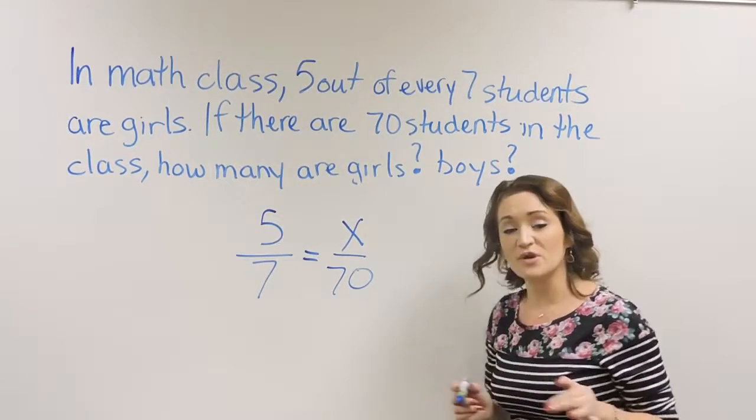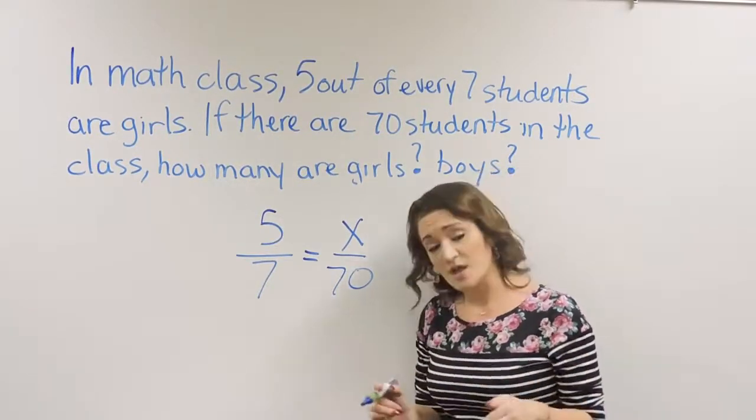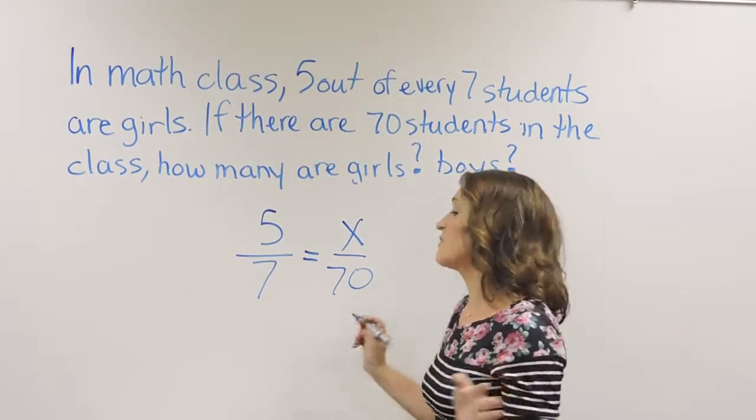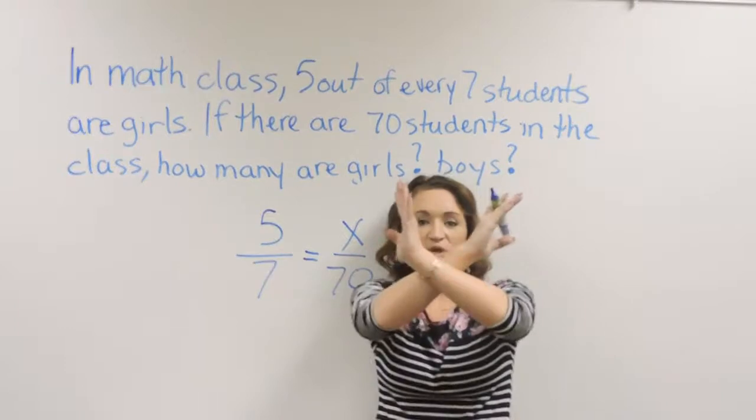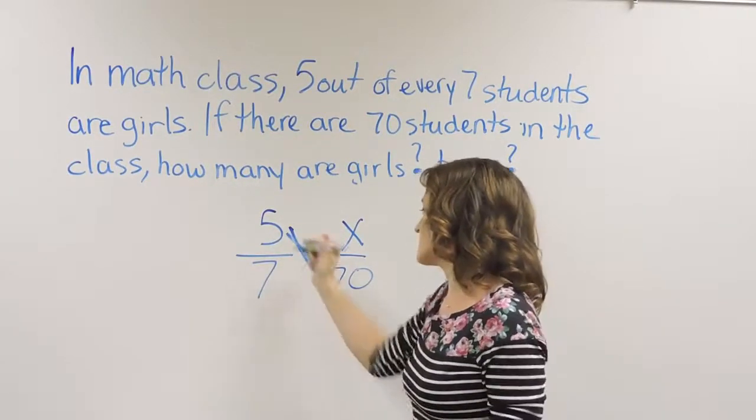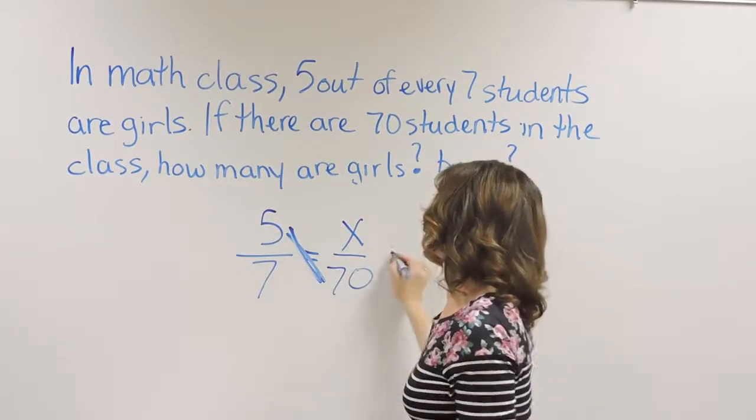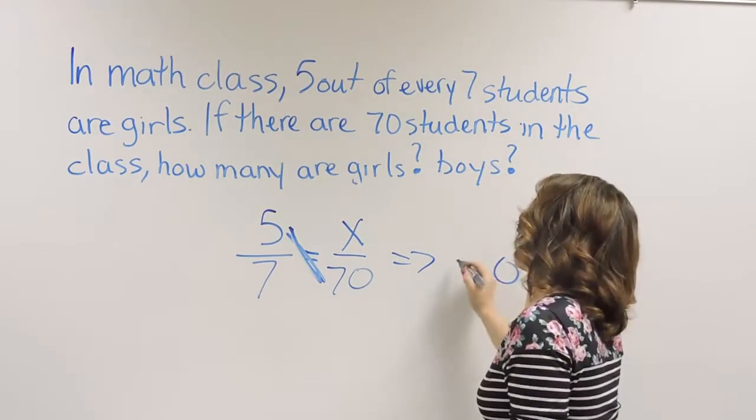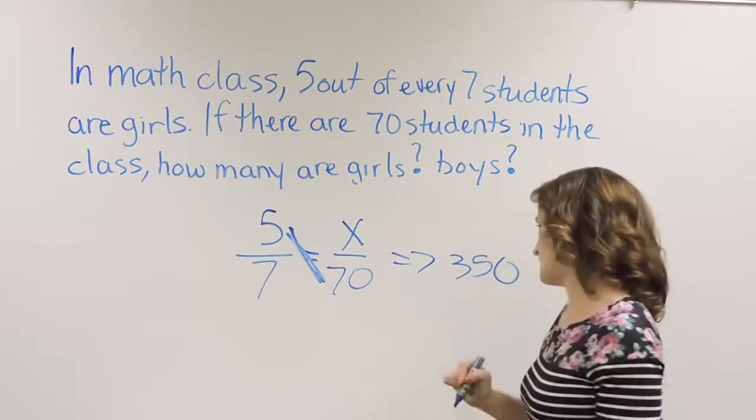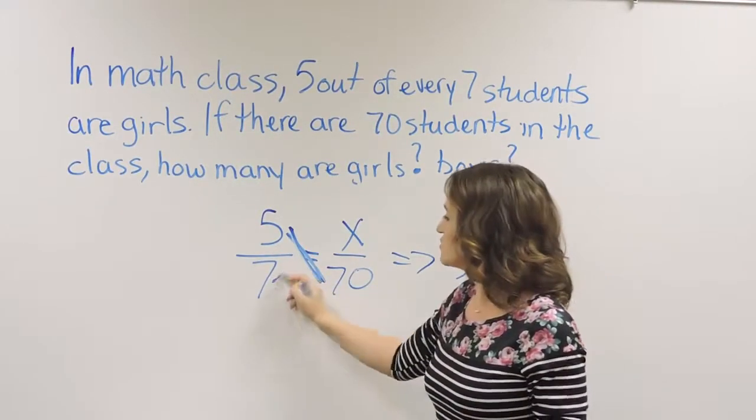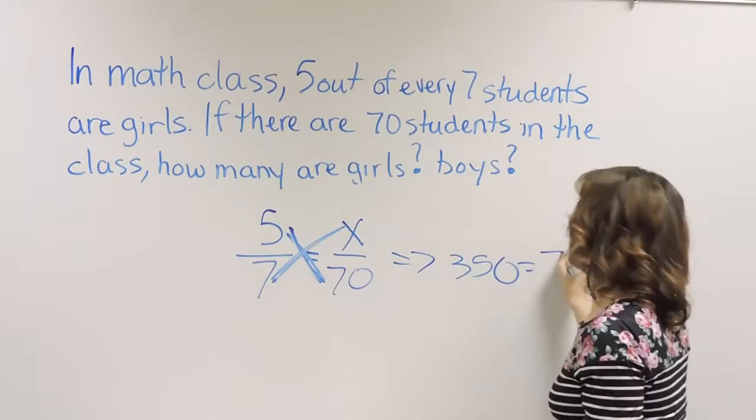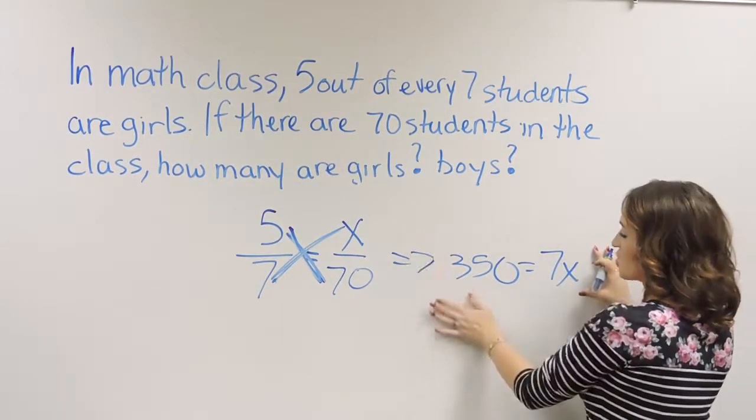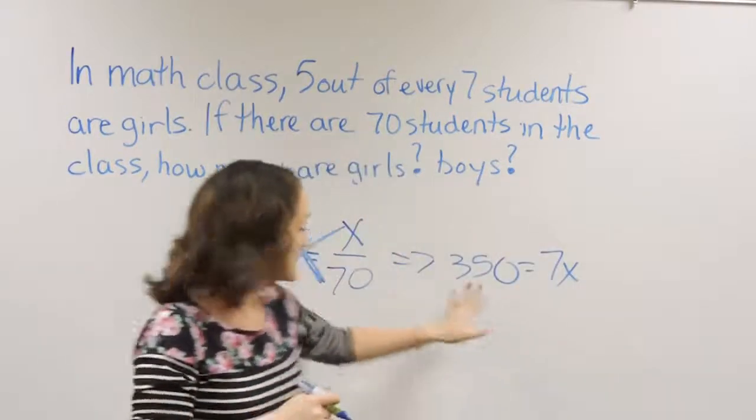Now that we have this proportion set up, in order to solve a proportion, you cross multiply. When you cross multiply, you literally make an X. 5 times 70, so 5 times 70 is 350. And that's going to equal 7 times X, which is 7X. So this is our equation: 350 = 7X.